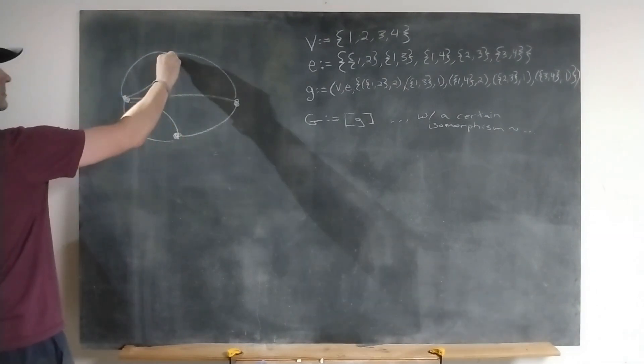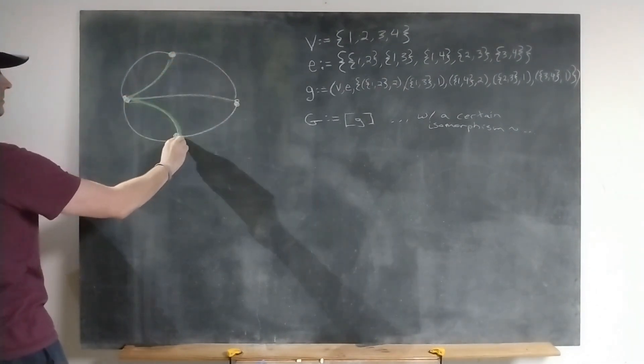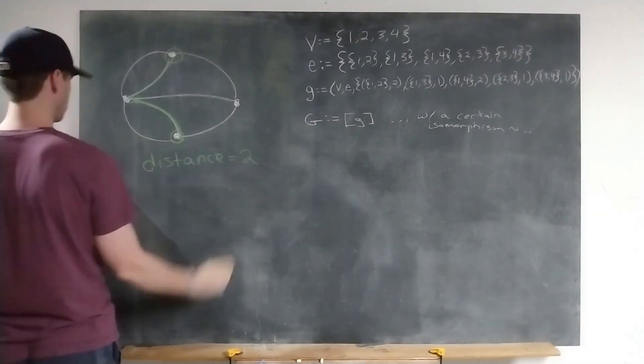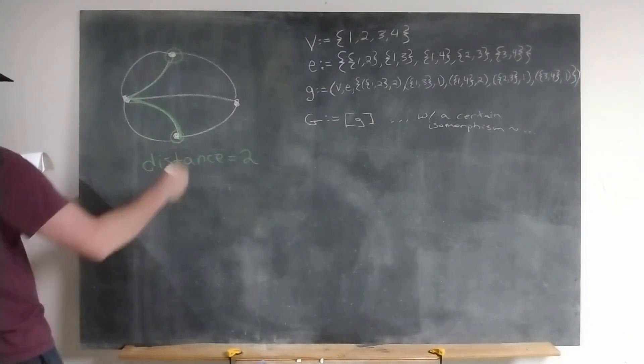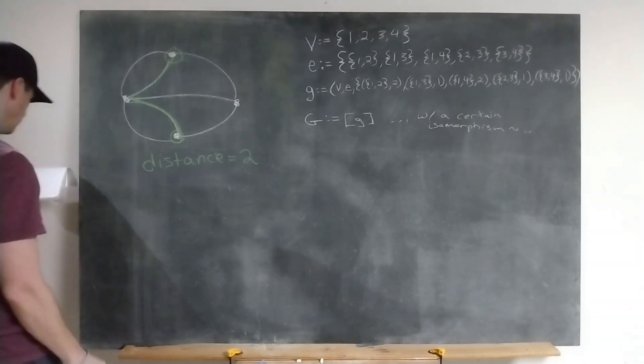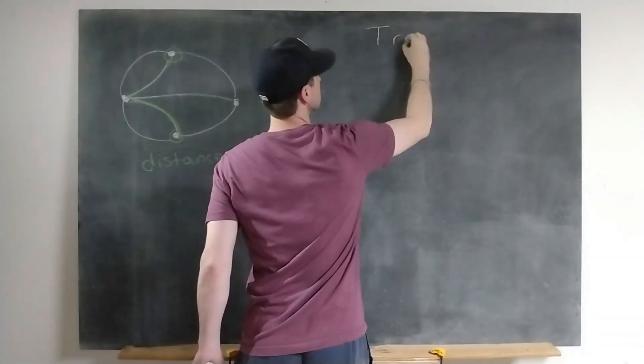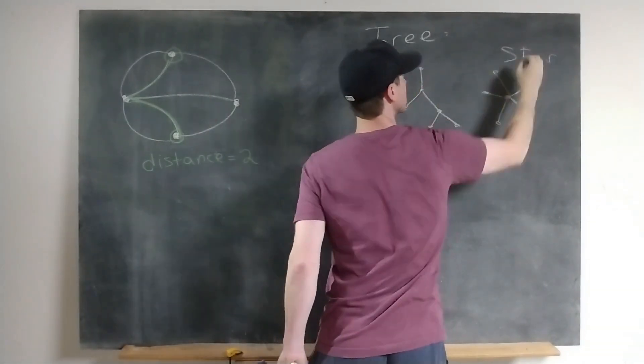Distance, i.e. fewest number of edges needed to traverse from one vertex to another. Or similarly, average distance, which is the average of all the distances for vertex pairs for a graph.